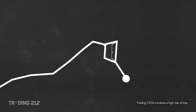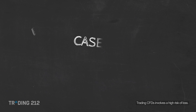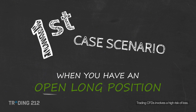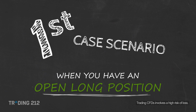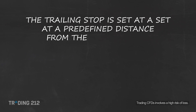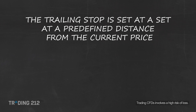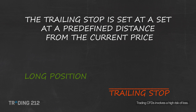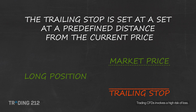Here's how. Let's look at the first case scenario when you have an open long position. The trailing stop is set at a predefined distance from the instrument's current market price. In the case of a long position, the stop price is placed at a fixed distance below the market price.